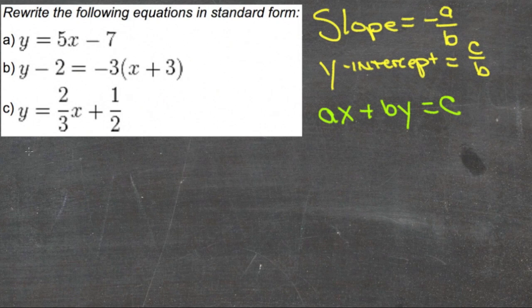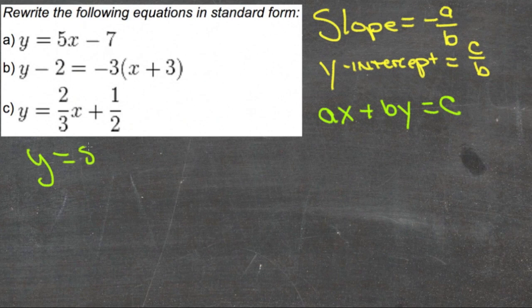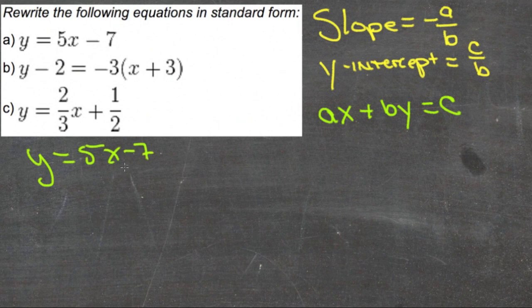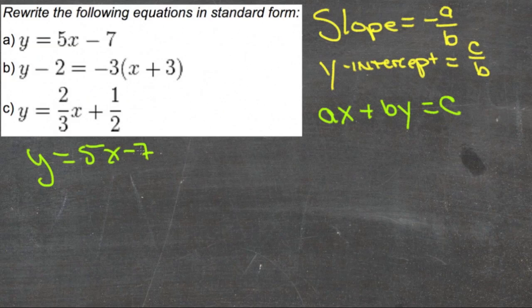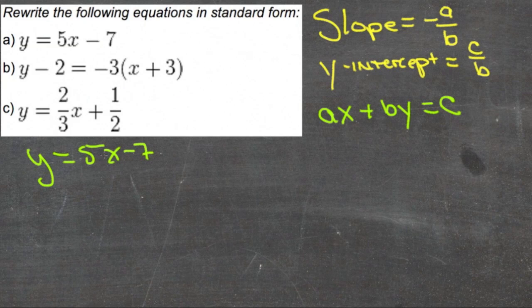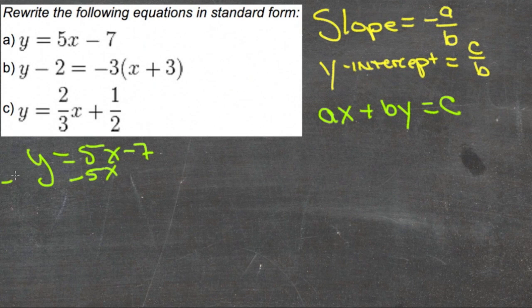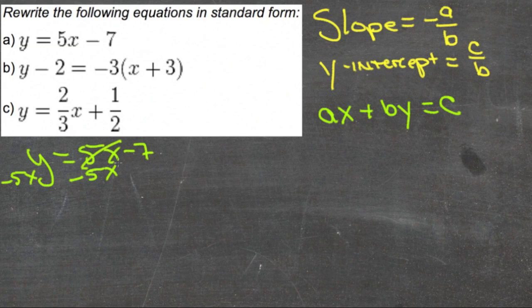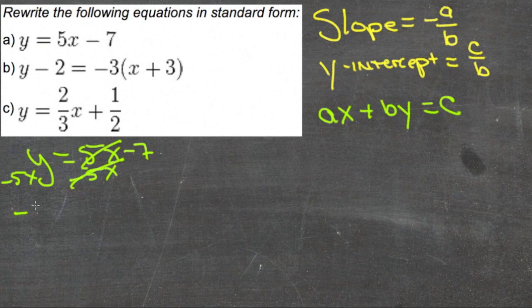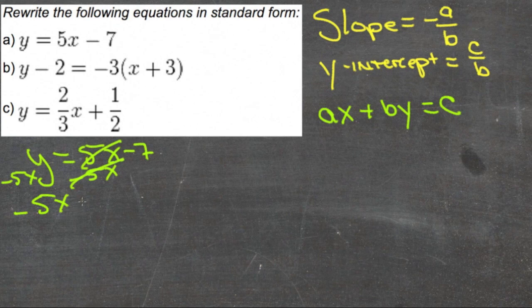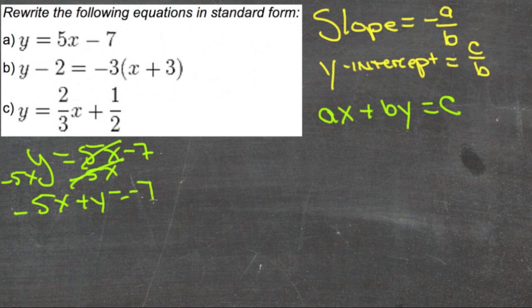In our first example, we have y equals 5x minus 7. The 5x and the 7 are on the same side and y is on the other side, so we need to collect our variables on one side. I'm going to subtract 5x from both sides. This will give us negative 5x plus y equals negative 7.